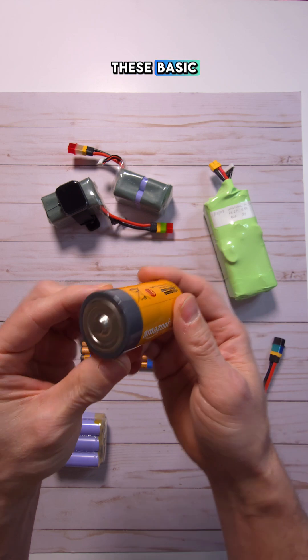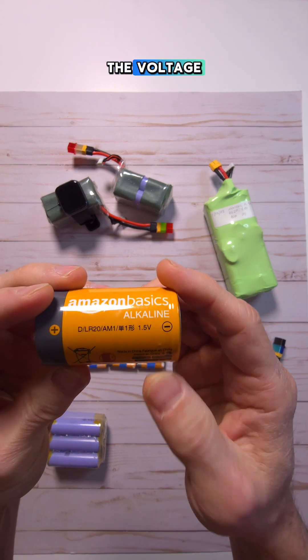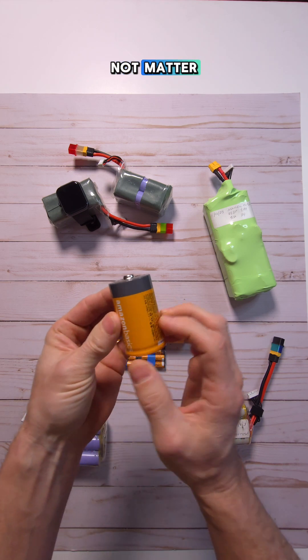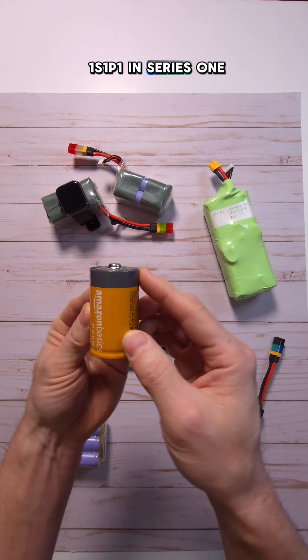To get a better understanding, we're going to use these basic batteries right here. You've got a positive side, you've got a negative side. And if you look at the voltage, it's only one and a half volts. The actual capacity does not matter. If you have one battery, you have a 1S1P, one in series, one in parallel.